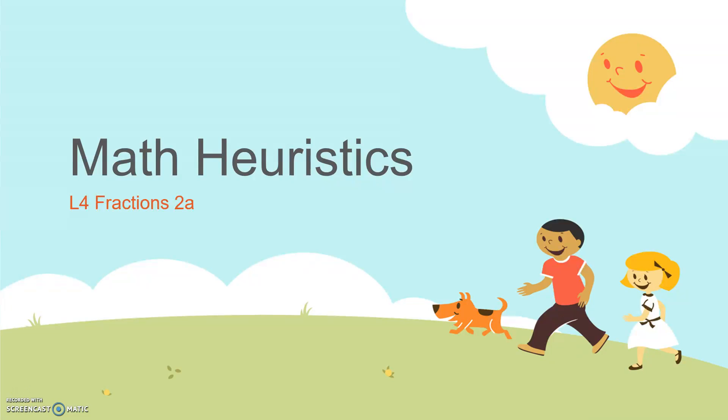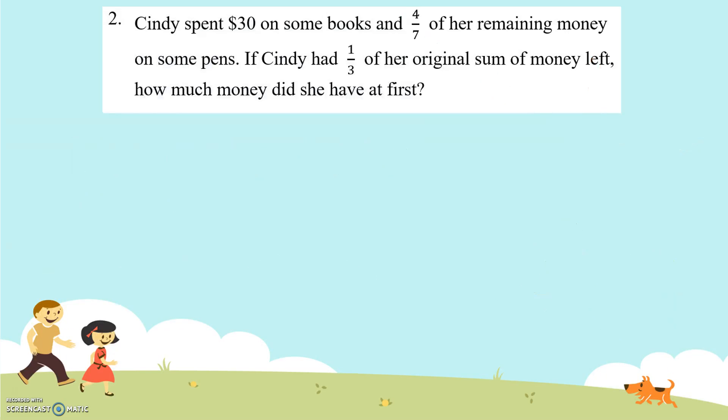Hi, welcome to Math Heuristics. This is Mr. Danny Lim. Today we'll be doing a lesson on Fractions 2A. Let's take a look at the question: Cindy spent $30 on some books and 4/7 of her remaining money on some pens. If Cindy had 1/3 of her original sum of money left, how much money did she have at first?